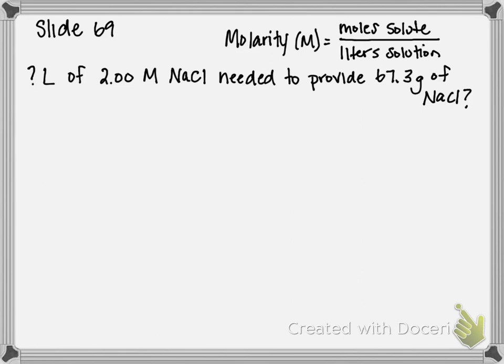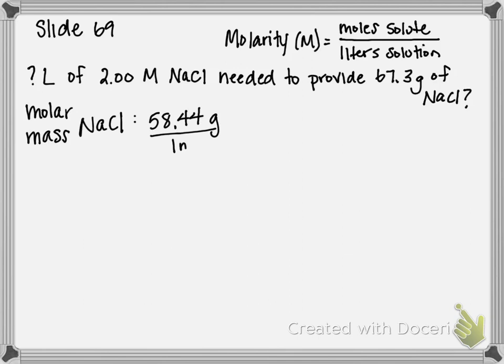We're going to start with the 67.3 grams of sodium chloride and use molar mass to get to moles. The molar mass of sodium chloride — if you add the mass of sodium plus the mass of chloride from the periodic table — we get that the molar mass is 58.44 grams per mole.